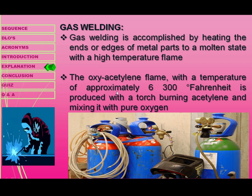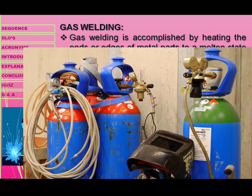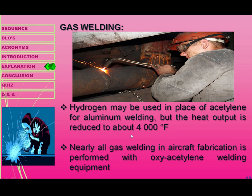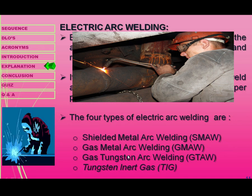The oxygen-acetylene flame produces a temperature of approximately 6,300 degrees Fahrenheit, generated with a torch burning acetylene mixed with pure oxygen. Hydrogen may be used in place of acetylene for aluminum welding, but the heat output is reduced to about 4,000 degrees Fahrenheit. Nearly all gas welding in aircraft fabrication is performed with oxy-acetylene welding equipment.